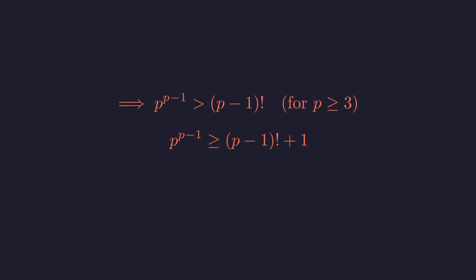Since these are all integers, if p to the (p-1) is strictly greater than the factorial, it must be at least 1 greater. This means equality in our original equation is impossible for p greater than or equal to 3.